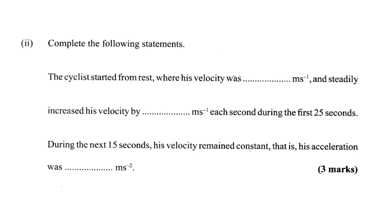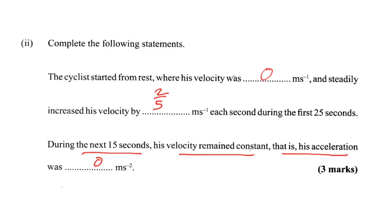Complete the following statements: The cyclist started from rest where his velocity was 0, and steadily increased his velocity by 10 over 25 — or simplified, 2/5 meters per second each second. That's meters per second squared. During the first 25 seconds. During the next 15 seconds, his acceleration was 0 — if your velocity is constant, your acceleration is 0. You're not moving faster, you're not getting slower.